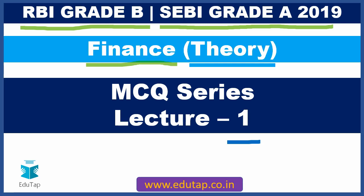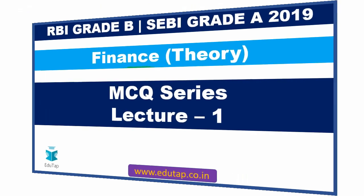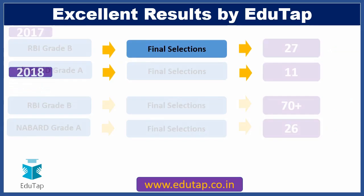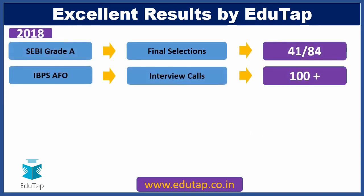Before jumping to the first MCQ, let me grab this opportunity and let you know about the excellent results produced by Edutap. For 2017, we got 27 final selections in RBI Grade B and 11 final selections in NABARD Grade A. For 2018, our results improved drastically — over 70 plus final selections in RBI Grade B and 26 in NABARD Grade A. For SEBI Grade A in 2018, out of 84 candidates selected, 41 were from Edutap. For IBPS Agriculture Field Officer, we got over 100 plus interview calls.